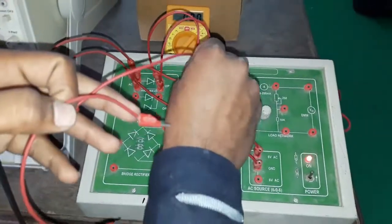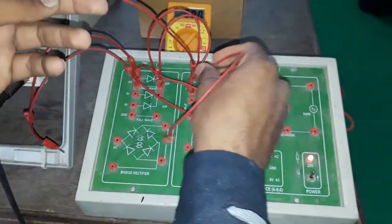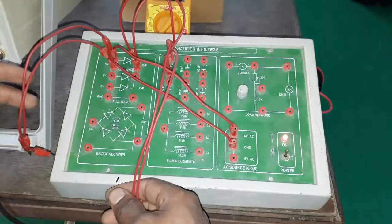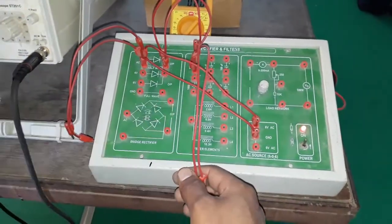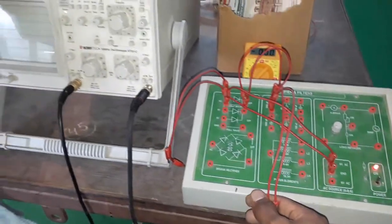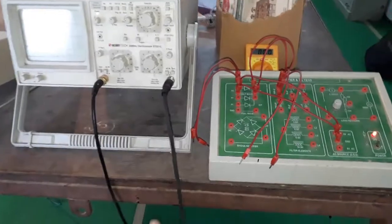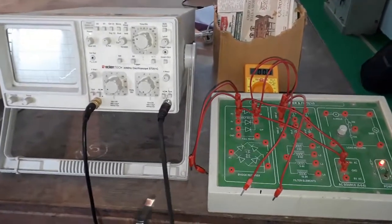With this I can see the ripple factor. By applying filter on CRO, by using these filters I can see the signal on CRO. This is my first channel and this is my second channel. With this I can look at the signals in CRO.